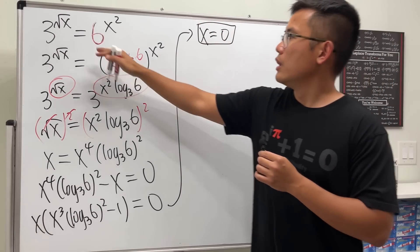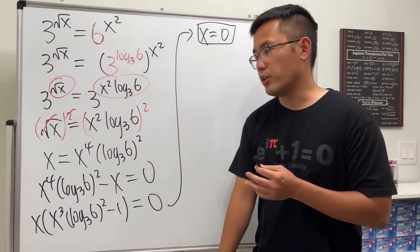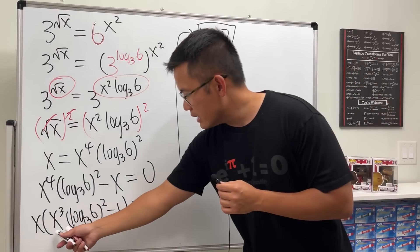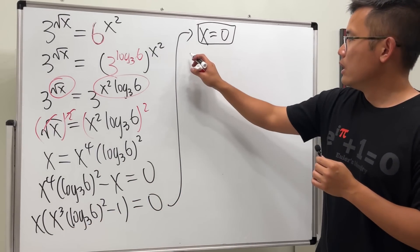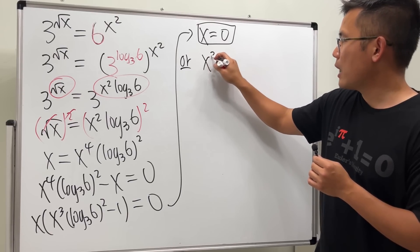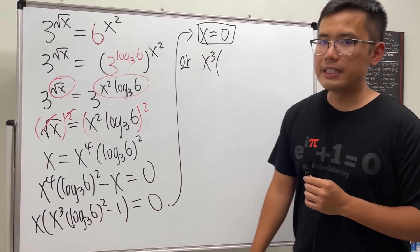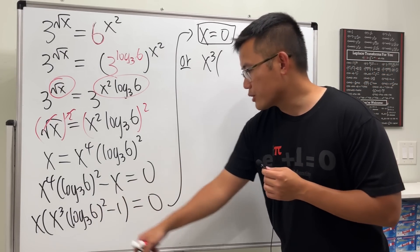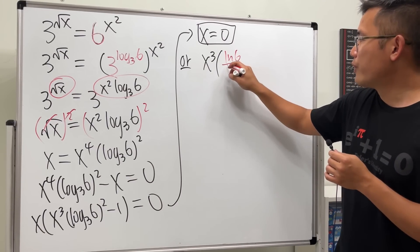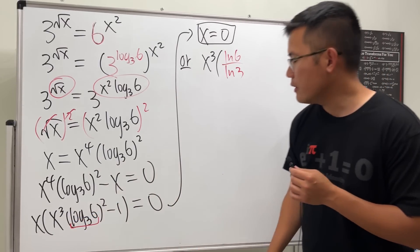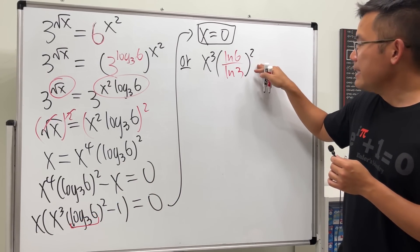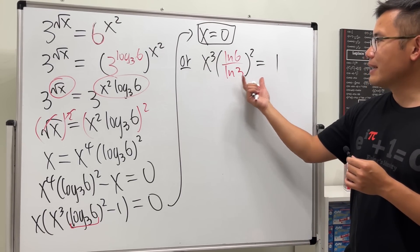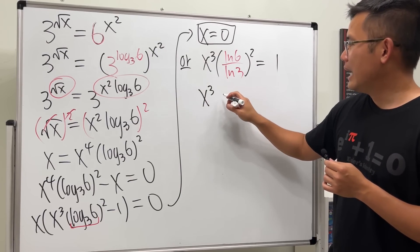So x equals zero is indeed a solution, because when x equals zero, 3 to the 0 equals 1 and 6 to the 0 equals 1 — both sides equal one. For the other solution, we need x cubed times (log base 3 of 6) squared minus 1 equals zero, meaning x cubed times (log base 3 of 6) squared equals 1. Using the change of base formula, log base 3 of 6 becomes ln 6 over ln 3.